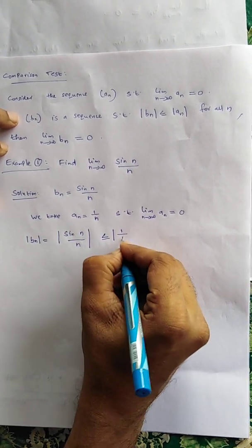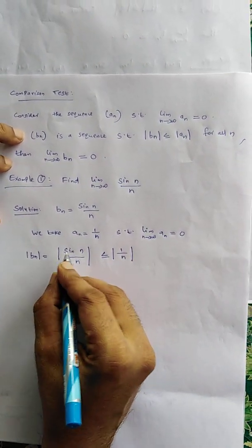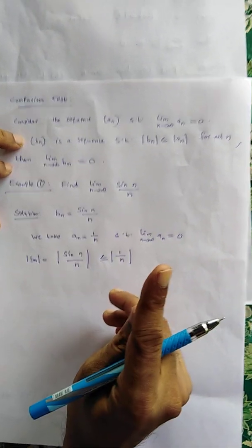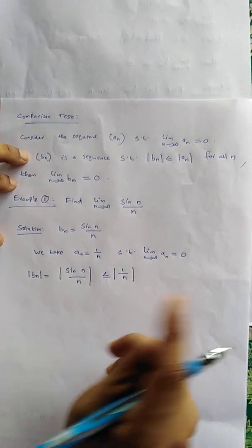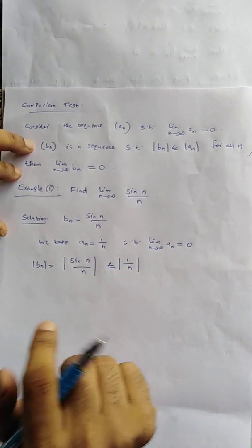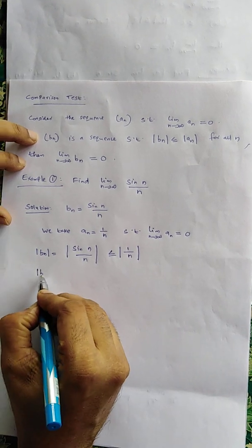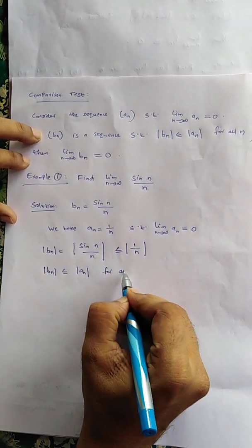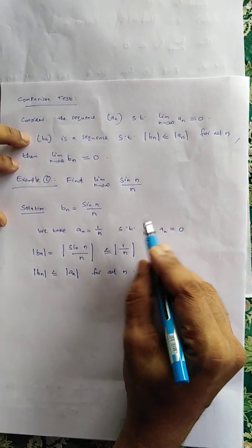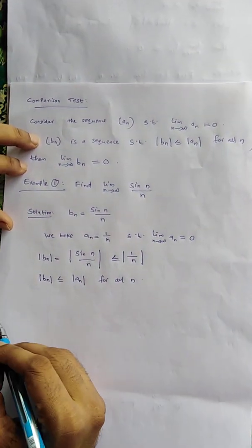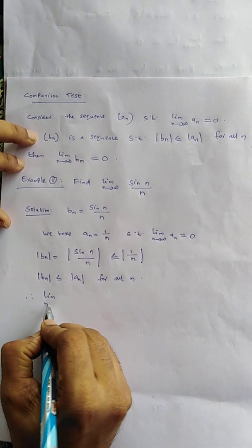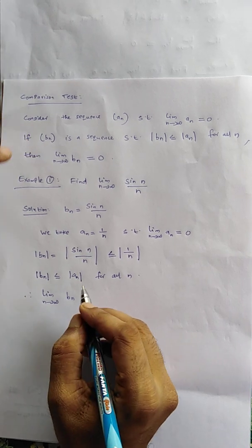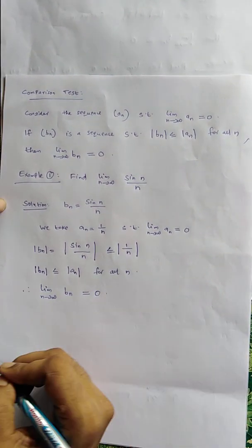is less than or equal to |1/n|, because |sin(n)| is always less than or equal to 1 since sin(n) lies between −1 and 1. So we have |b_n| ≤ |a_n| for all n, and lim(n→∞) a_n = 0. Therefore we conclude that lim(n→∞) b_n, that is lim(n→∞) sin(n)/n, is also equal to 0.